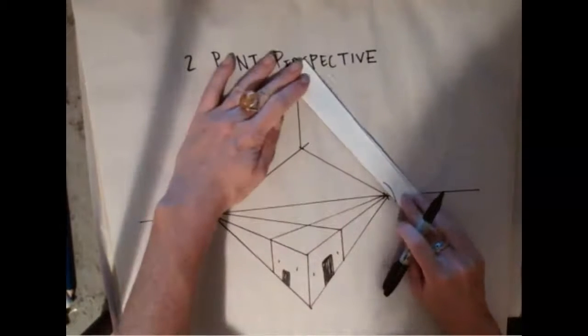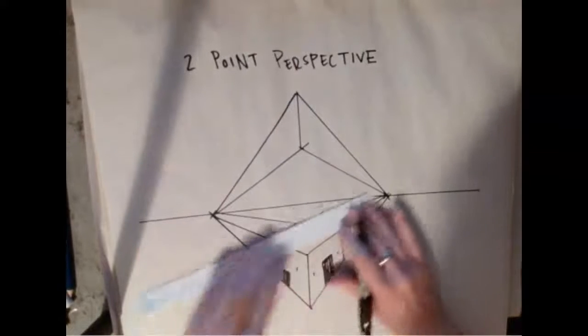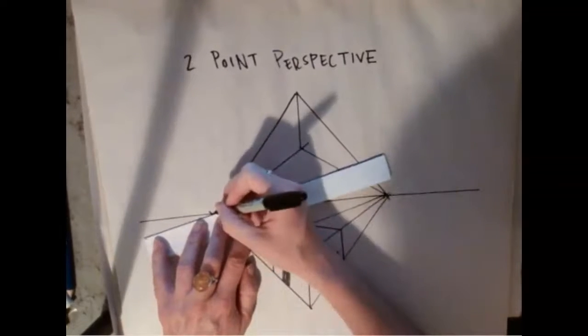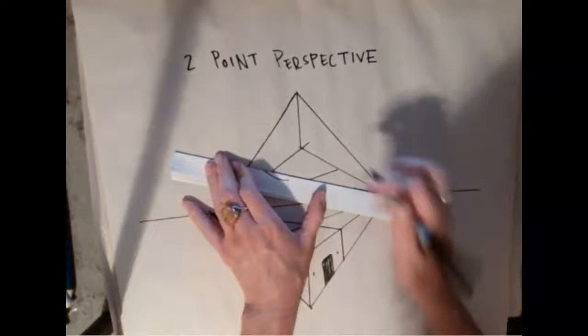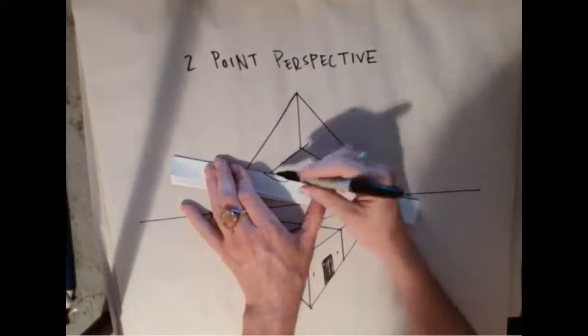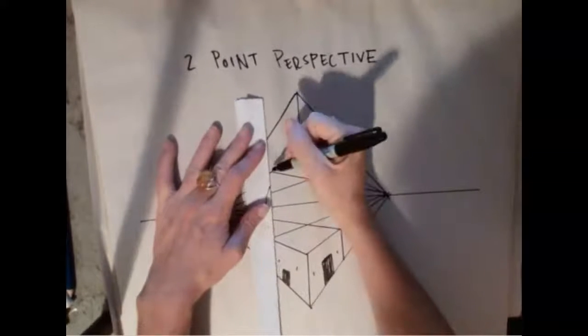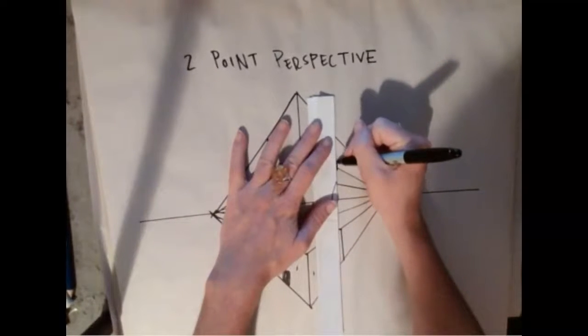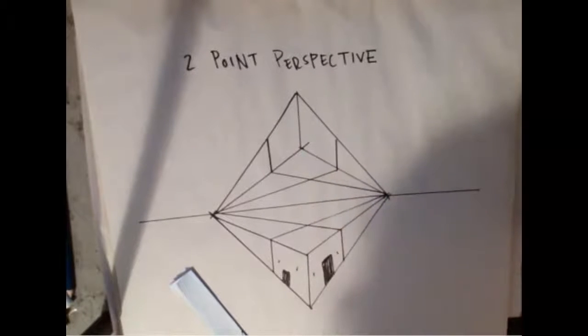And if you've done this before and you do it slightly differently, that's totally fine. As long as you're getting the basic fundamentals down. It's everything is connecting back to those vanishing points. And note, it's all about looking at where the edges are and where your horizontal lines are, where your vertical lines are, and where your diagonal lines are. So I would just recommend experimenting with this as much as possible.